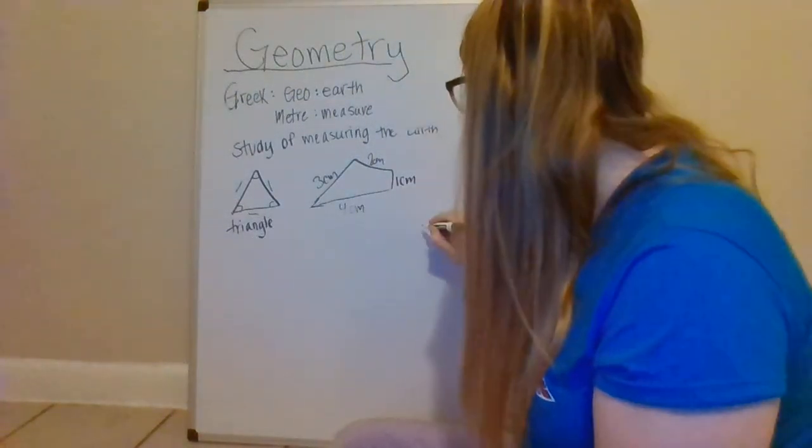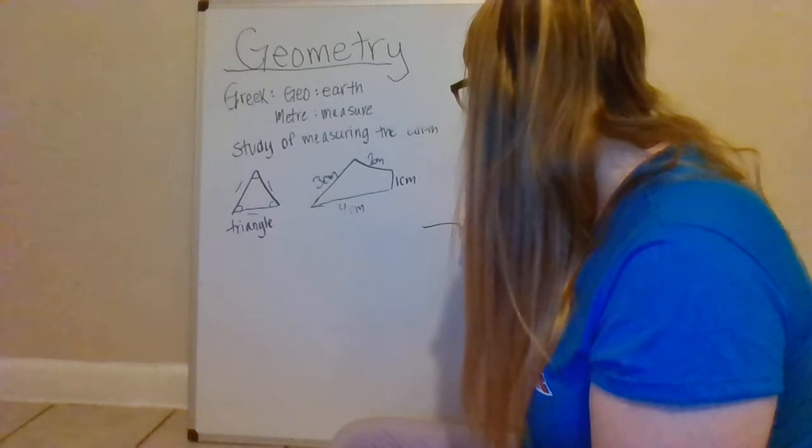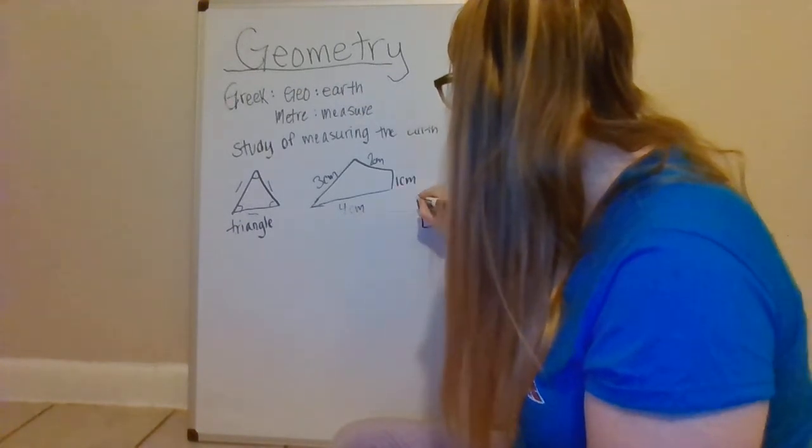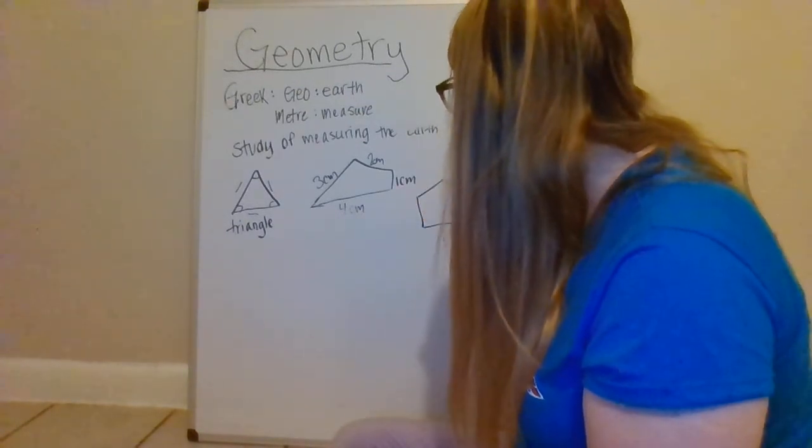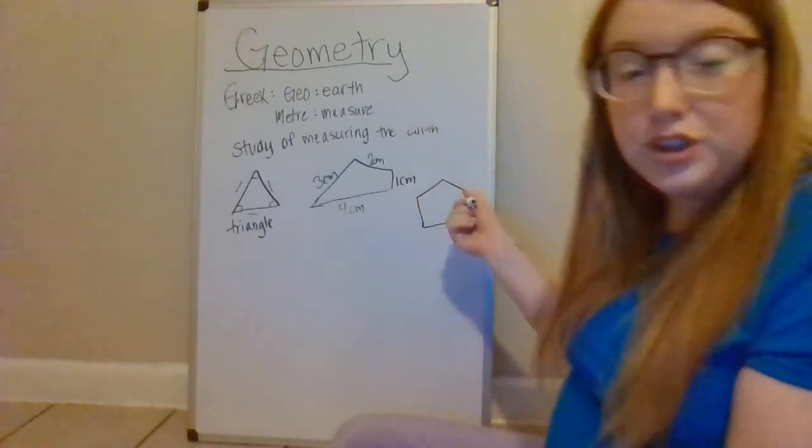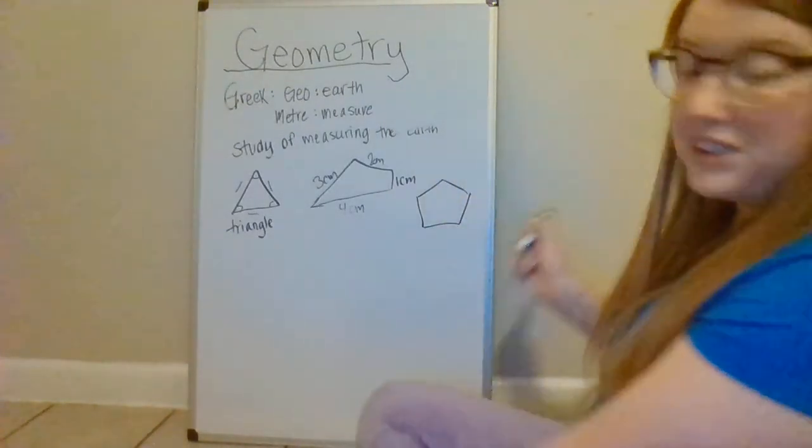Some sides can all have the same length. An example of this would be, who can recognize what that shape is? Let's see what we know about it.